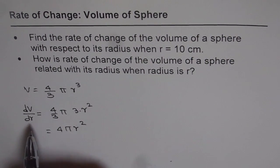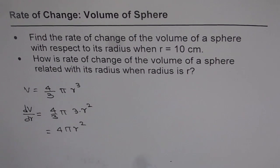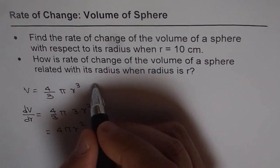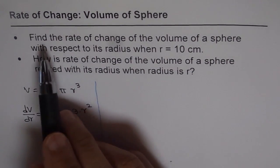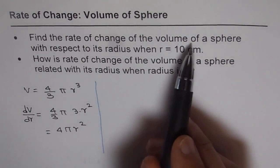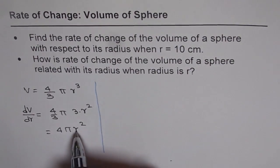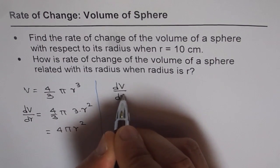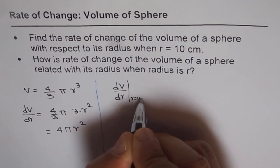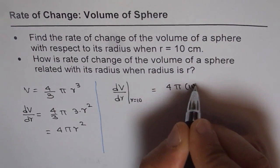So that is the rate of change of volume with respect to radius: 4πr². Does it remind you of something? Think over it, while I answer Part A of the question — find rate of change of volume of a sphere with respect to its radius when r equals 10. So when r equals 10,